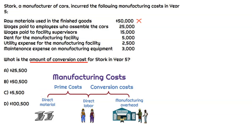How about wages paid to employees who assemble the cars? These are the assembly workers putting the steering wheel on, putting the tires on. They are direct labor — directly traceable costs to that car. Direct labor is both part of prime cost and conversion costs, so we're going to include that.